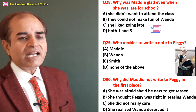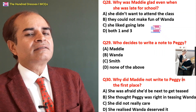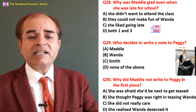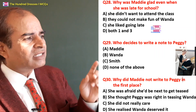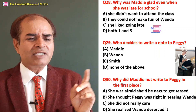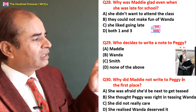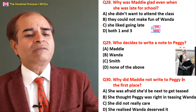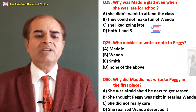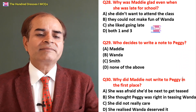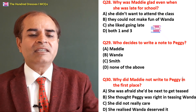Thirtieth question: Why did Maddy not write to Peggy in the first place? She was afraid she would be the next to get teased — yes. She thought Peggy was right in teasing Wenda — no. She did not really care — no, she cared. She realized Wenda deserved it — no. A is the right answer — she was afraid she would be next to get teased, which is why Maddy decided not to write to Peggy initially.